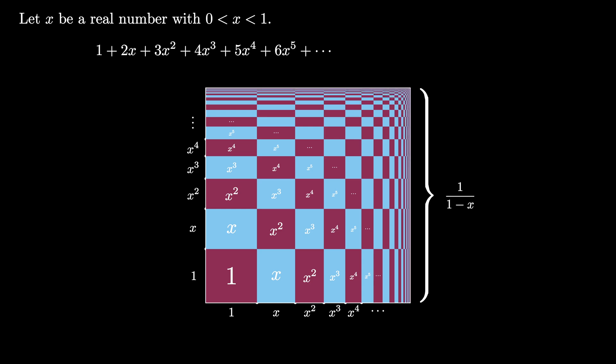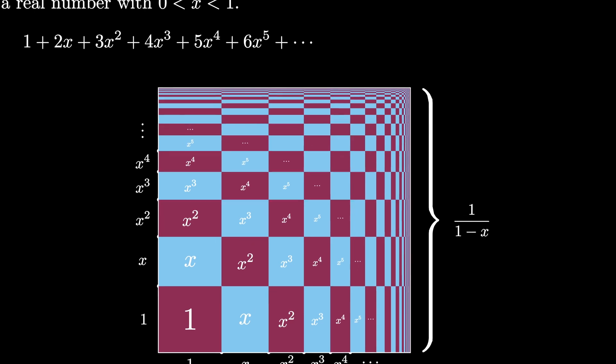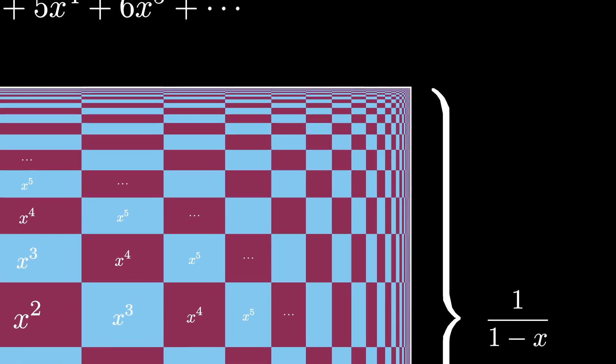But now we can imagine that this process has been carried out infinitely often. That means that we're looking at a limiting process. In this infinite limiting process, the entire square will be shaded by these rectangles.